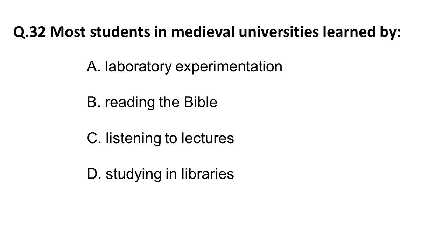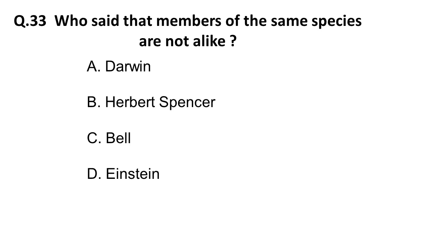Next question: most students in medieval universities learned by — options are laboratory experimentation, reading the Bible, listening to lectures, or studying in library. In the medieval era, students learned by listening to lectures, so that is the correct answer. Next question: who said that members of the same species are not alike? Options are Darwin, Herbert Spencer, Bell, Einstein. Recalling Darwin's theory of evolution, it mentioned that members of the same species are not alike. The correct answer is Darwin.